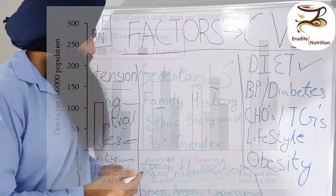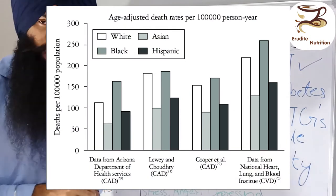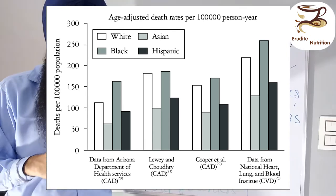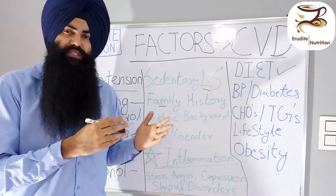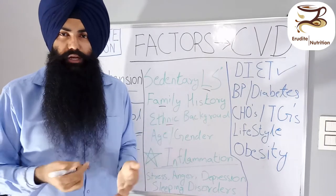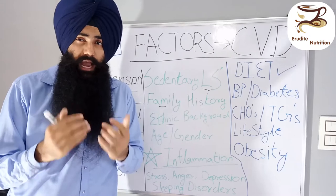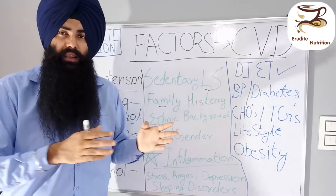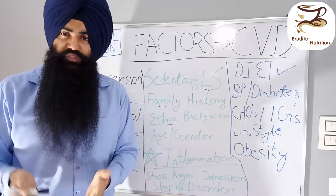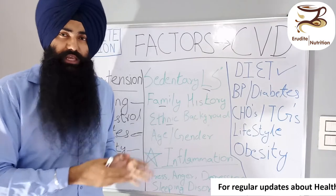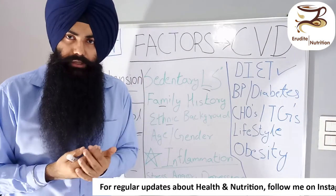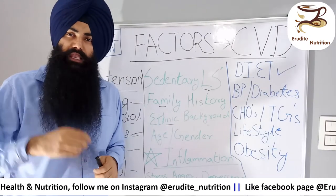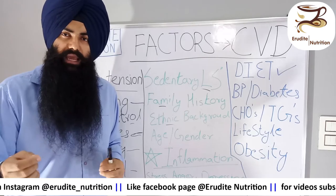Next is ethnic background. Globally, some races are more prone to cardiovascular diseases. We Indians, for example, have a higher chance of developing cardiovascular disease — it has to do with the geographical relation of climate, genetic composition, DNA, family history, and lifestyle in the community. This is something we cannot change, but there is no harm in leaving an inflammatory lifestyle for a healthy one.